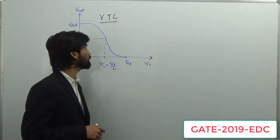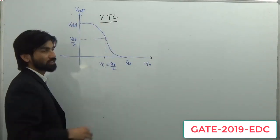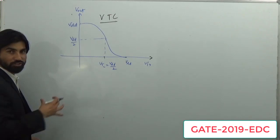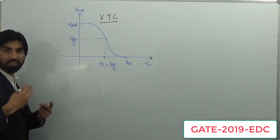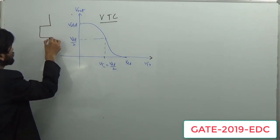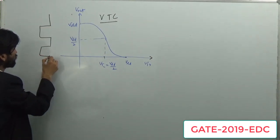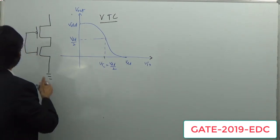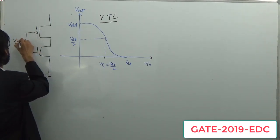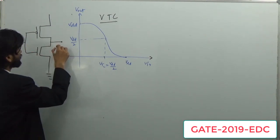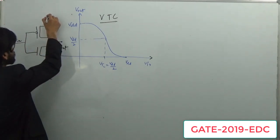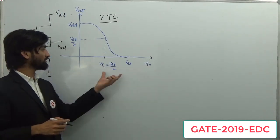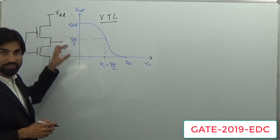They have given the VTC — output voltage versus input voltage characteristic for the CMOS inverter. Let us see how the CMOS inverter looks. There is a PMOS and an NMOS transistor. Both gates are shorted and VIN is applied there; output is taken at the drain junction. VDD is at the top. When VIN = VDD/2, the output is also VDD/2, as mentioned in the VTC.